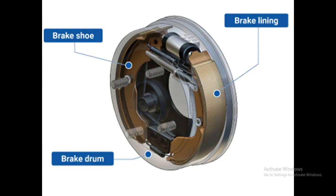We are going to see the construction of one type of brake: the internal expanding shoe brake. When we apply the force, the shoes — this is one shoe and this is another one — expand and come in contact with the brake drum. The brake drum is a rotating element, and after contact between the friction lining and brake drum, there is absorption of kinetic energy and the rotation of the brake drum is retarded or stopped.